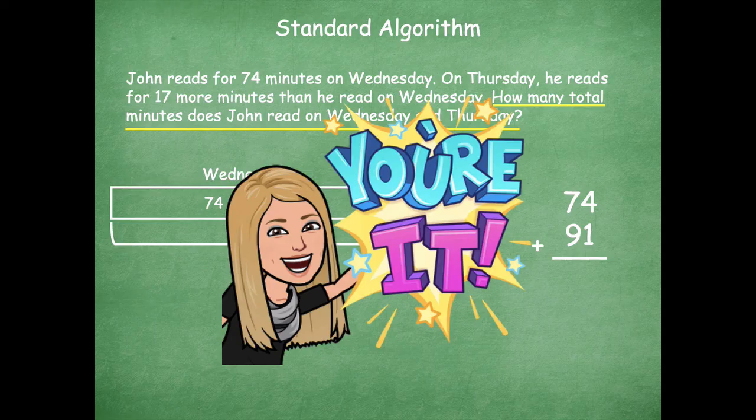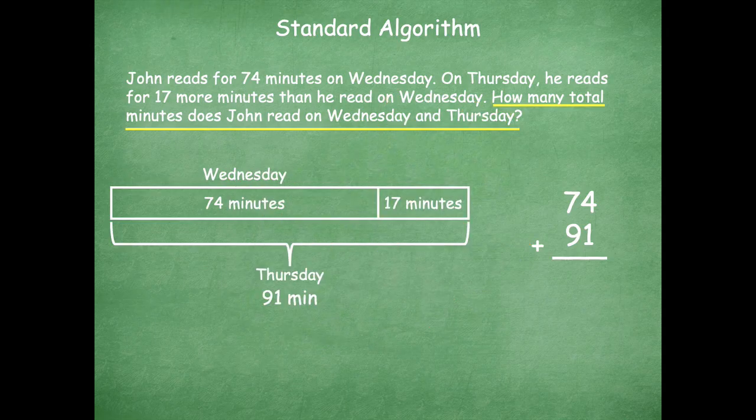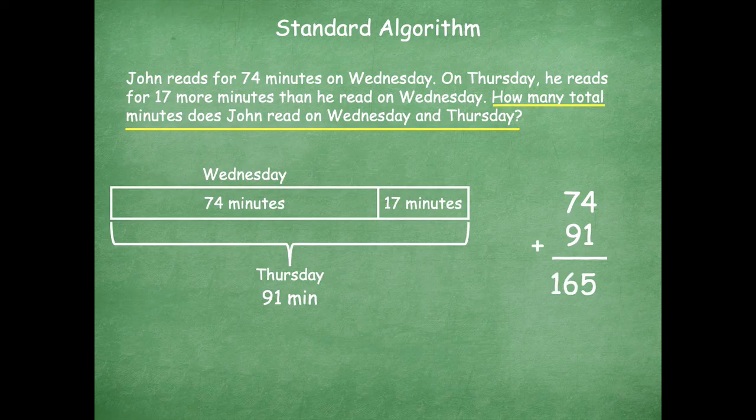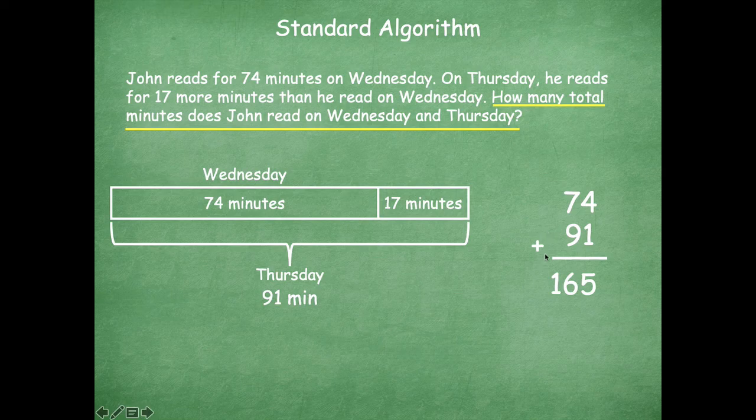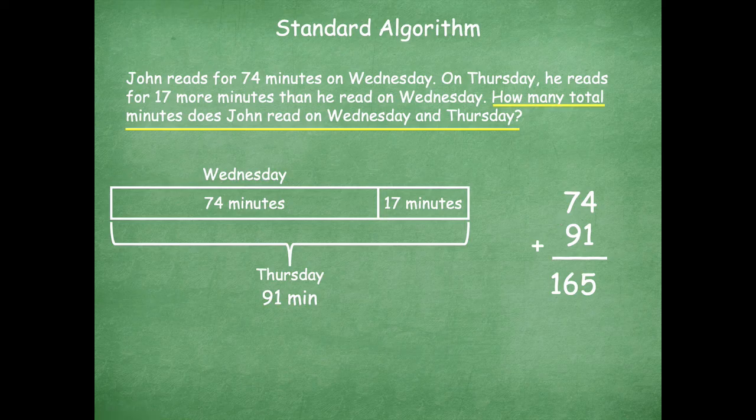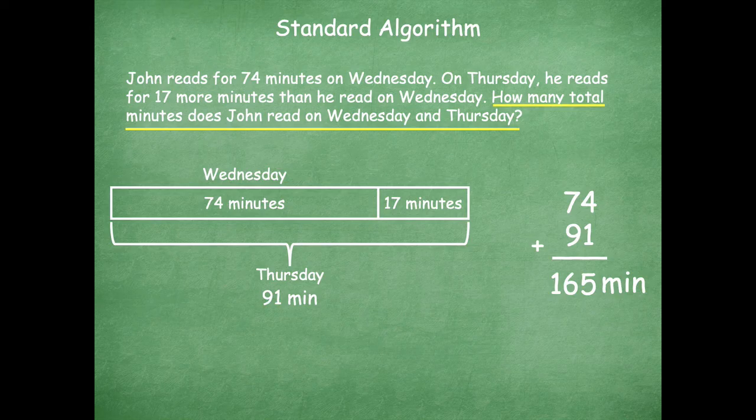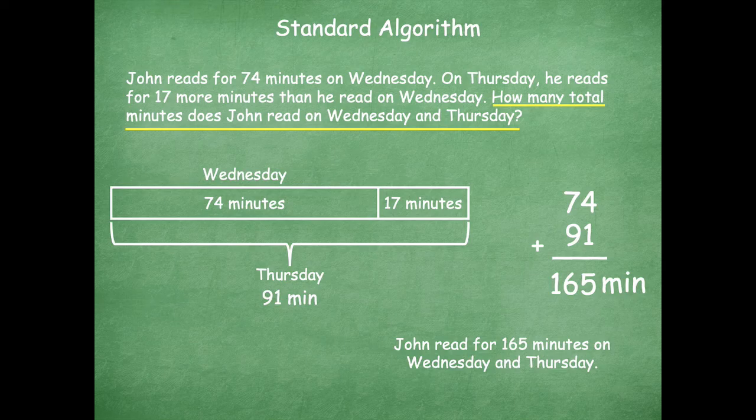Okay, so start in the ones place. Four plus one is five. Then we go to our tens place. Seven tens plus nine tens is 16 tens. Now you're allowed to write 16 down in your answer because there's no digits in our hundreds place for this problem. So as long as there's nothing in the place value to the left, you can put your answer in the total. You don't have to rename anything like we did when we were renaming the ones. So don't forget again to label as you're going through what you're counting by. So John read for a total of 165 minutes on Wednesday and Thursday.